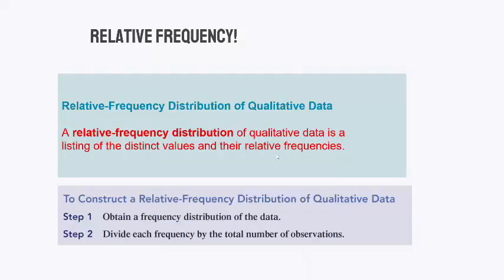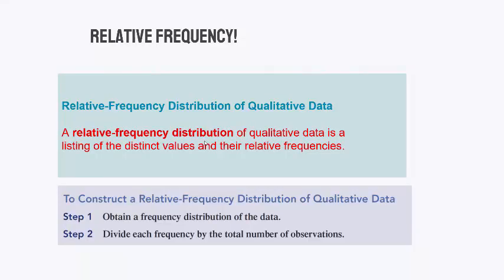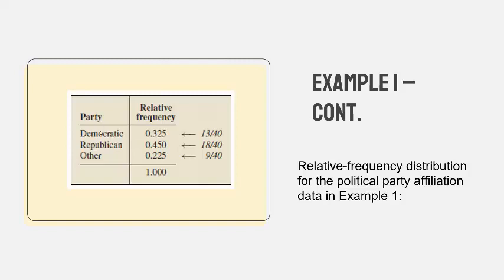Next, I want a relative frequency distribution — instead of just counts, I want percentages. This is the listing of the distinct values and their relative frequencies. To do this, obtain the frequency distribution and divide each frequency by the total number of observations. So 13 Democrats divided by 40 gives 32.5%, 18 Republicans divided by 40 gives 45%, and 9 Others divided by 40 gives 22.5%.